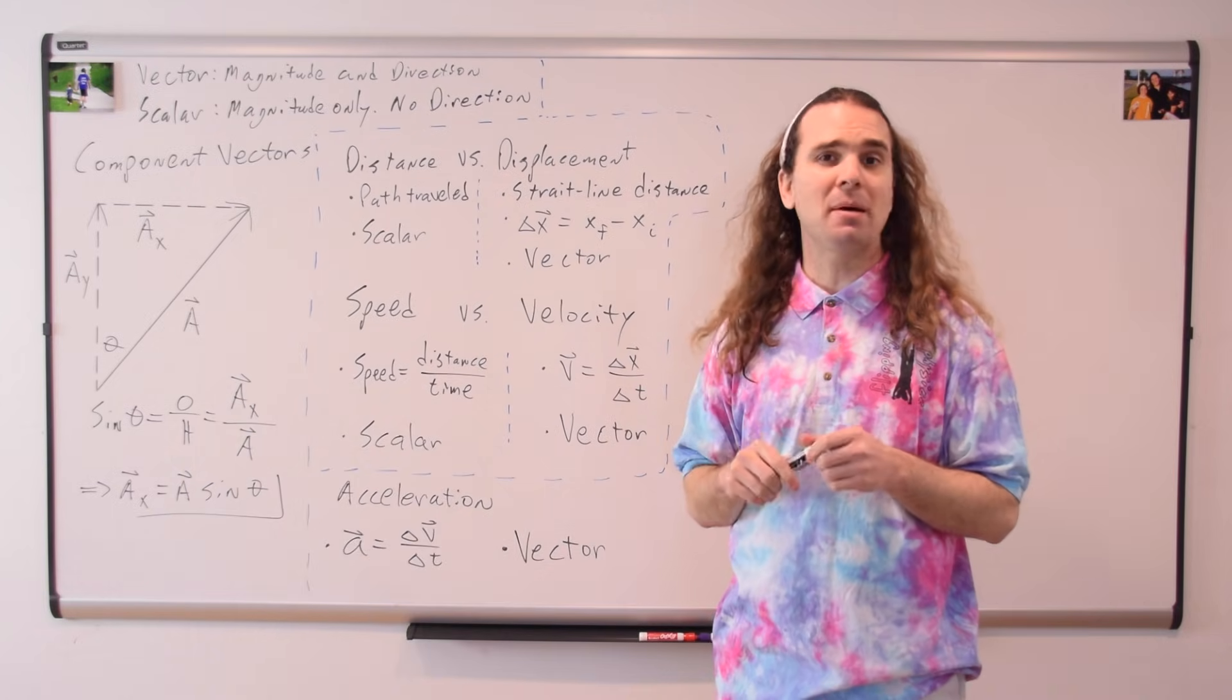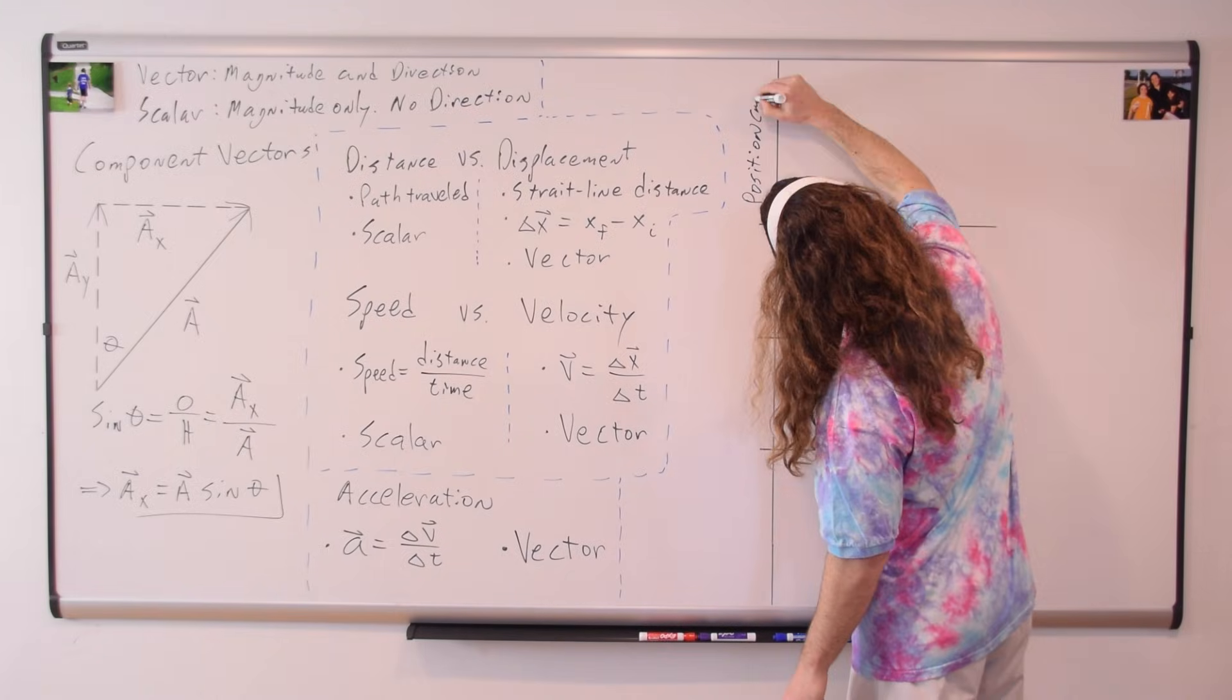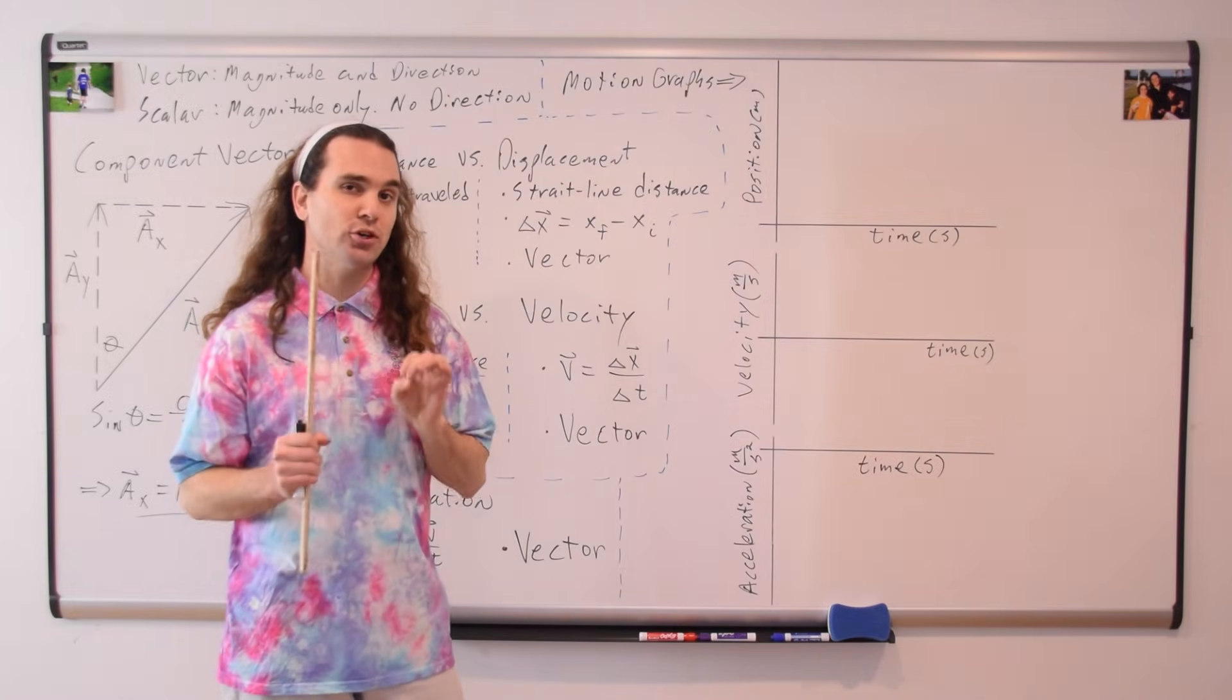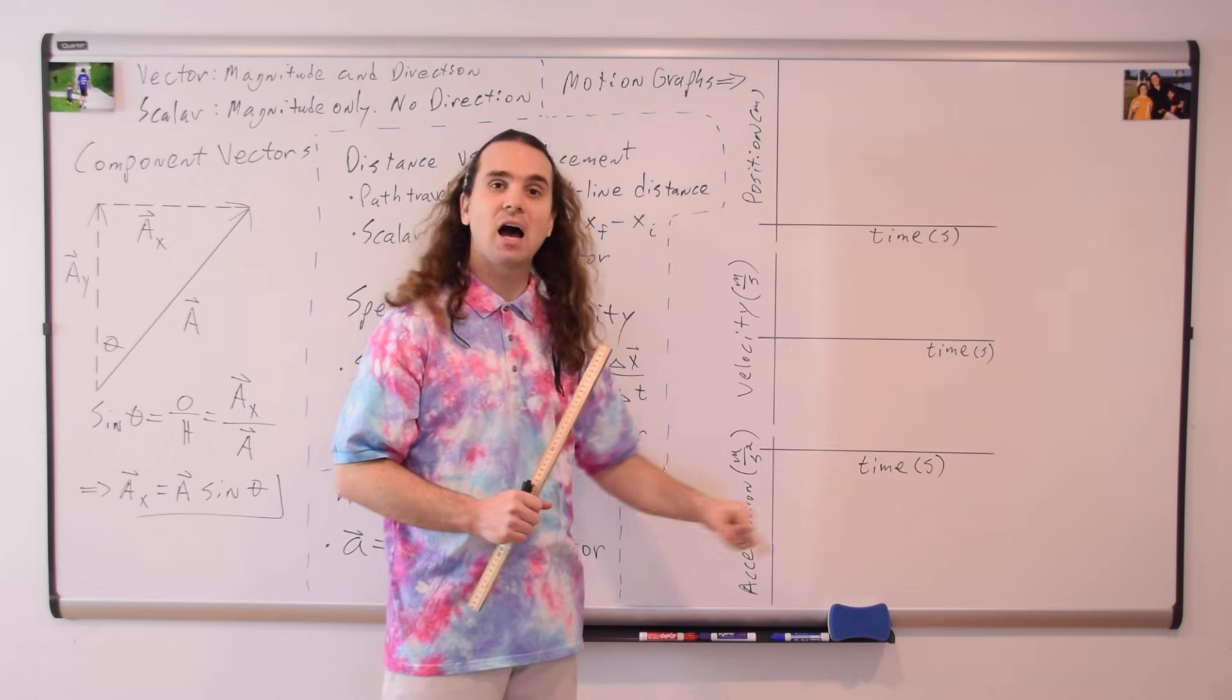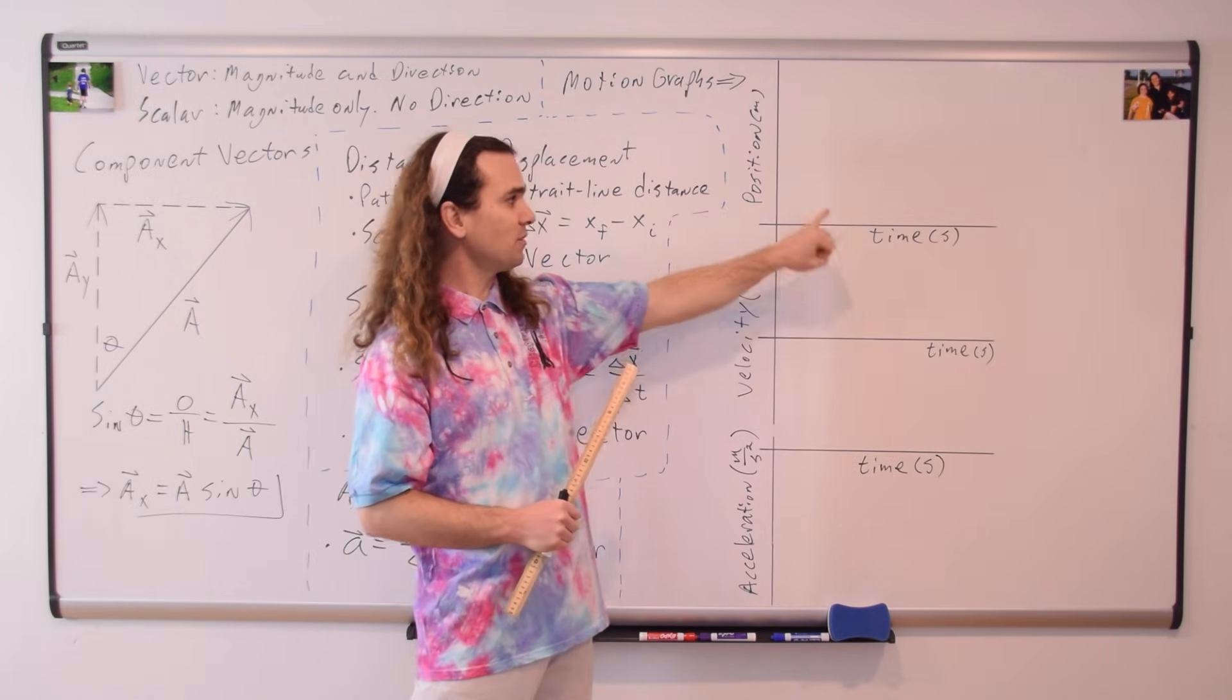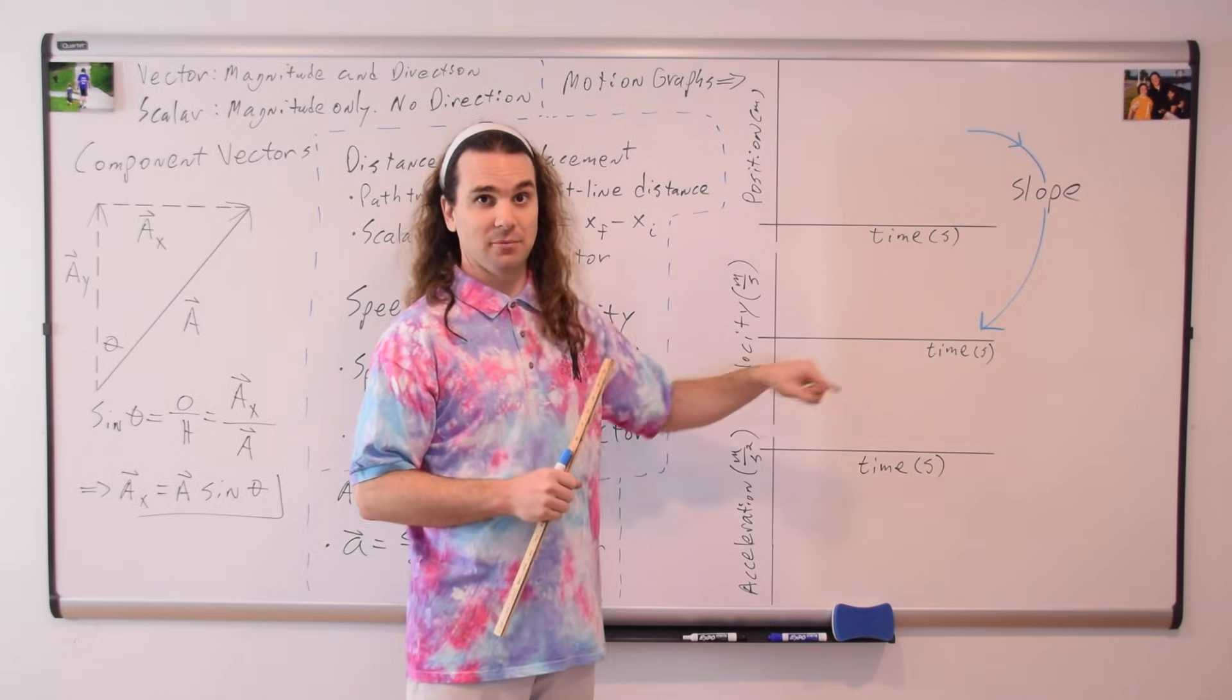And now let's talk about motion graphs. Graphs of the motion of an object. Position, velocity, and acceleration as a function of time graphs. I haven't drawn in the lines yet. I will in a minute. I have some questions first. Class, what is the slope of a position versus time graph? Velocity. What is the slope of a velocity versus time graph? Acceleration.